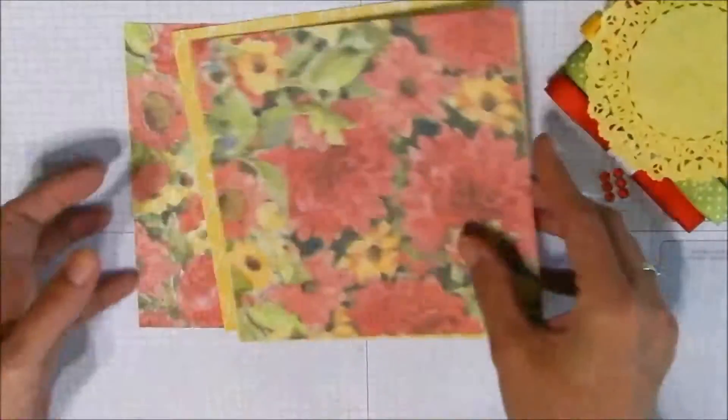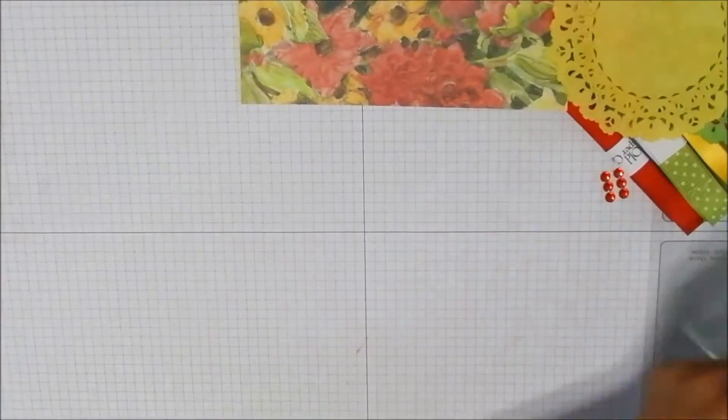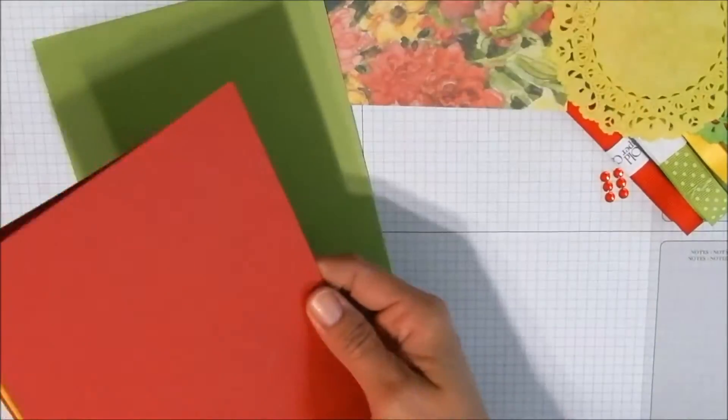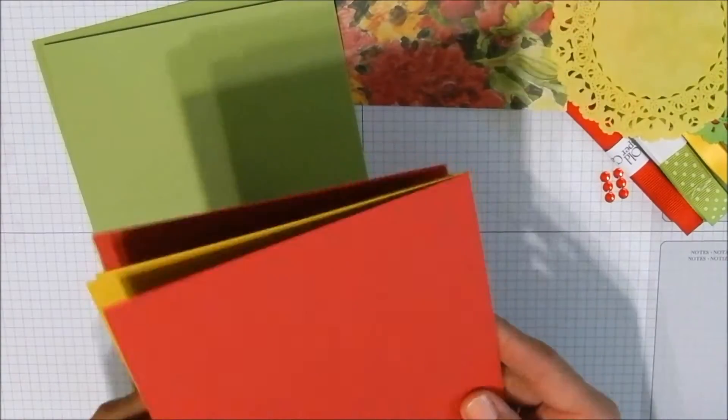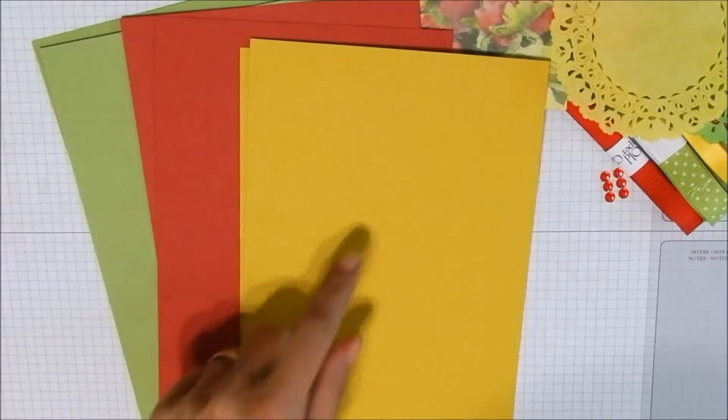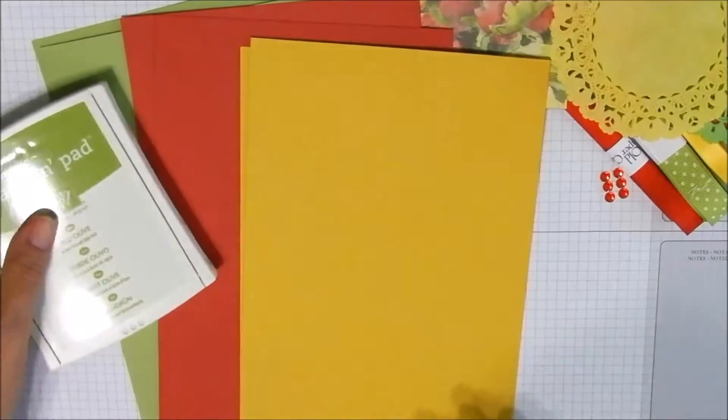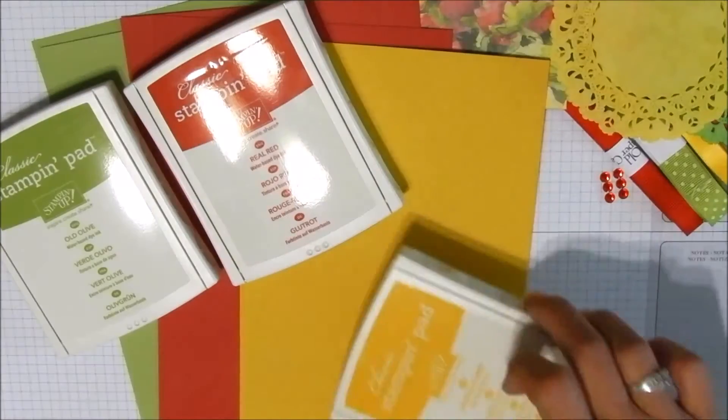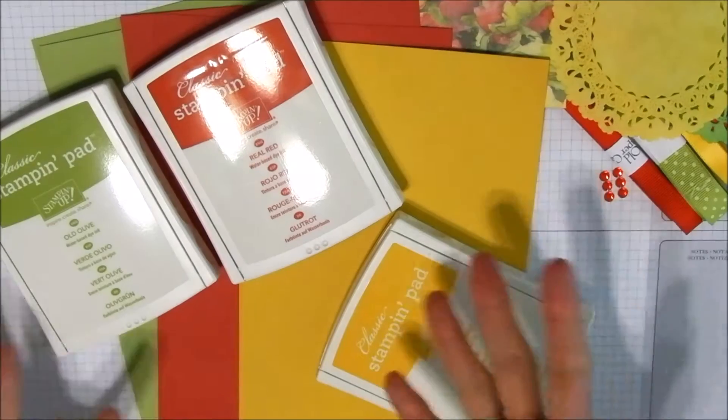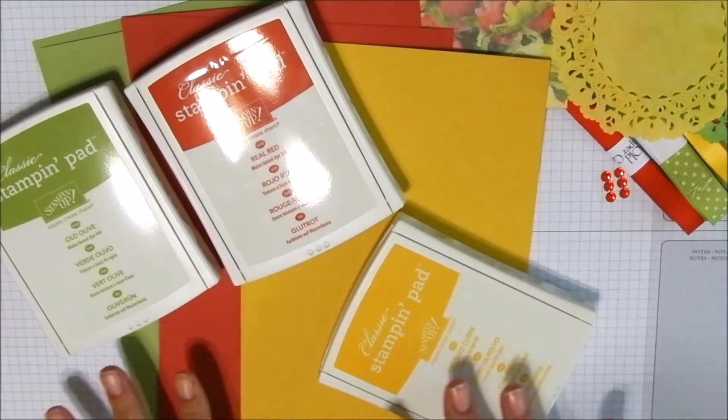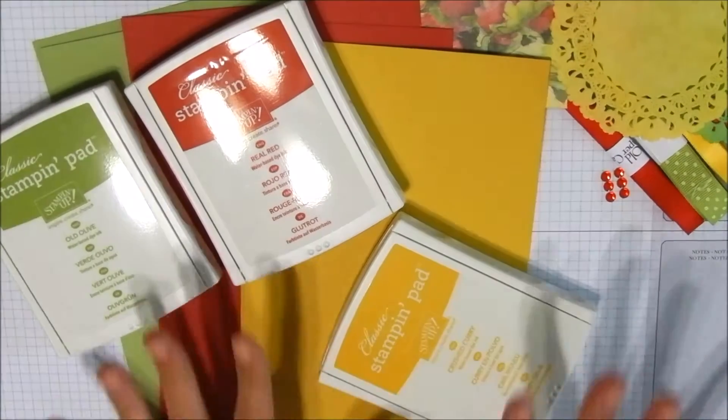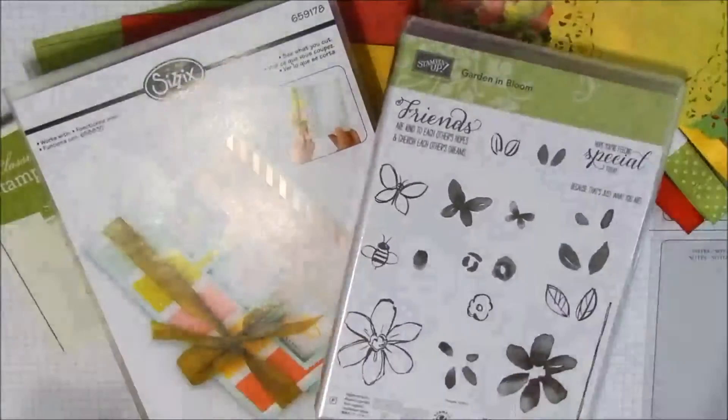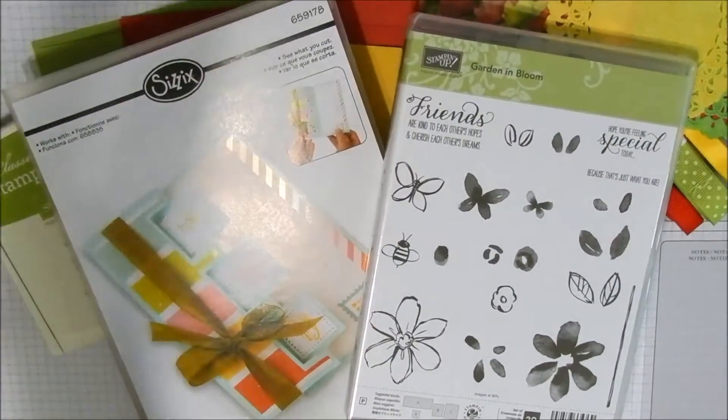Today is Old Olive and Real Red and Crushed Curry. The inks we're going to be using are Old Olive, Real Red, and Crushed Curry, and those will match our cardstock and all of our patterned papers just perfectly.